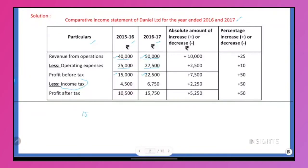So: 15,000 × 30/100. Cancel the zeros: 15 × 3 = 45, and two zeros, so 4,500. If you are in the last year, you will get a dash.